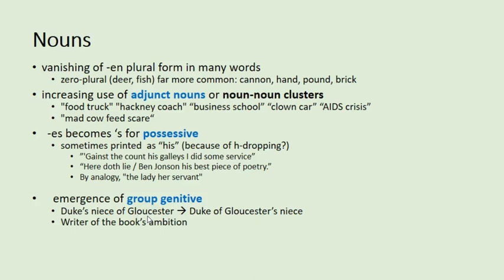Let's talk about nouns. One thing we see is the vanishing of the N plural, which you might know from 'children' and 'oxen' and 'brethren' — not much else. In many words this goes away and gets replaced just by the simple S form, such as the word 'iron' becomes 'irons.' We also get a proliferation of zero plural forms. We still have some of these in modern English, like 'deer' and 'fish.' In early modern English these were far more common — 37 cannon, or hand, or pound, or brick, or sometimes ship — things that were countable but often in great numbers would be used in zero plural.